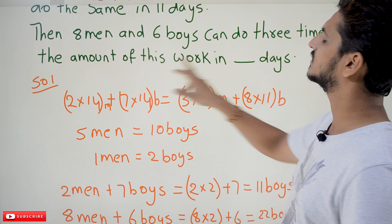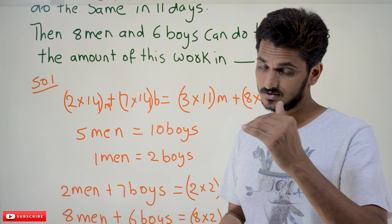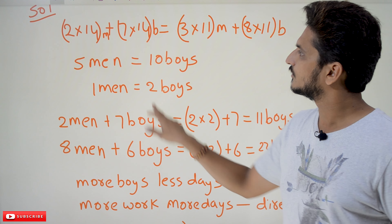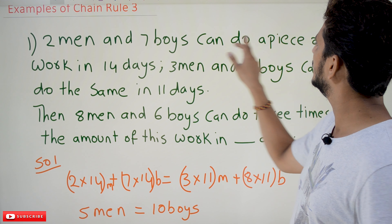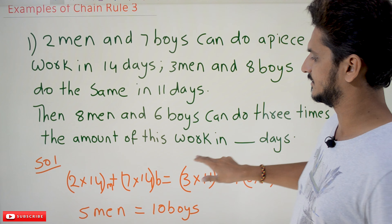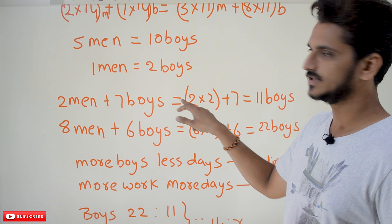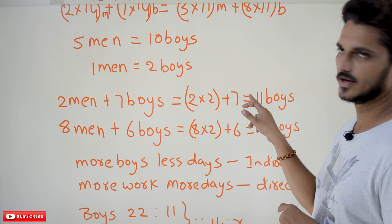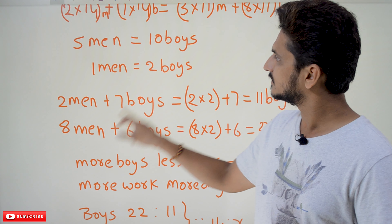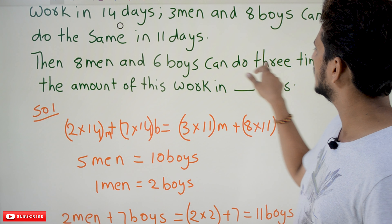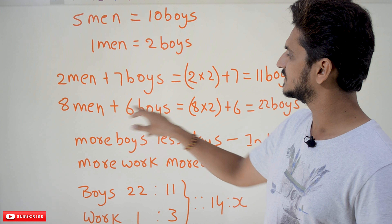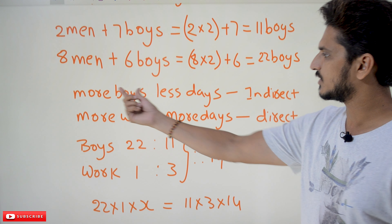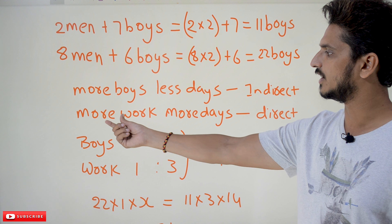Now, eight men and six boys can do three times the work. From the reference statement, two men and seven boys: converting using one man = two boys gives (2×2) + 7 = 11 boys. For eight men and six boys: (8×2) + 6 = 16 + 6 = 22 boys.